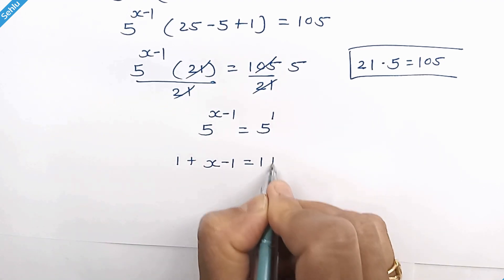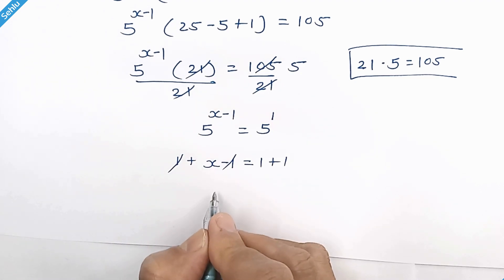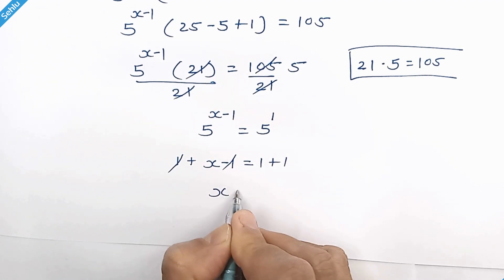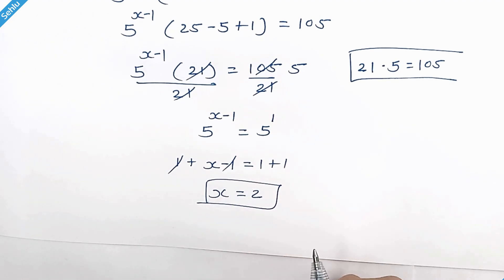Adding 1 to both sides, these get cancelled out. So we have x equals 2. And this is the answer.